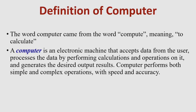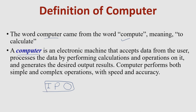So what is a computer? The word computer came from the word 'compute', which means to calculate. A computer is an electronic machine or device that accepts data from the user, processes that data by performing calculations and operations on it, and generates the desired output result. It works on the IPO concept — Input, Process, and Output.